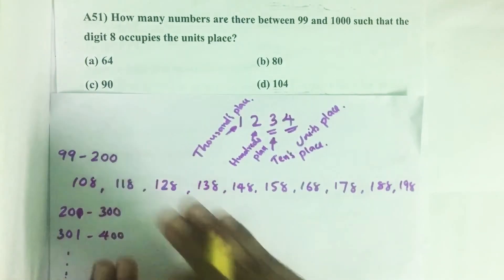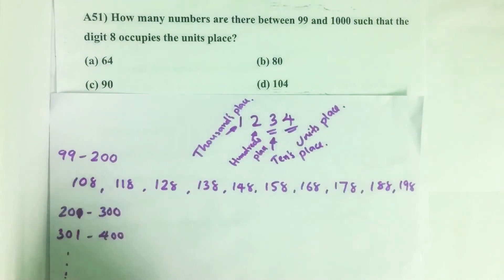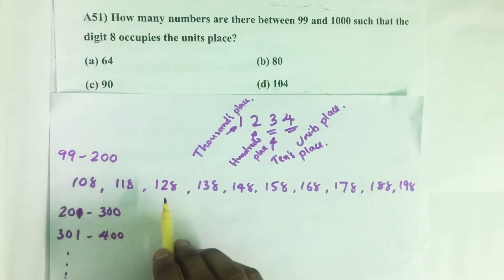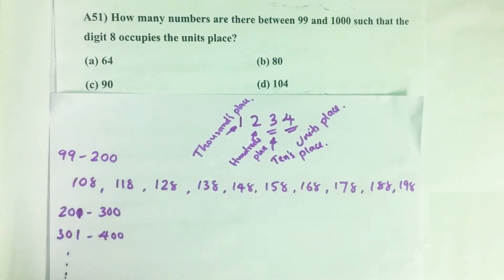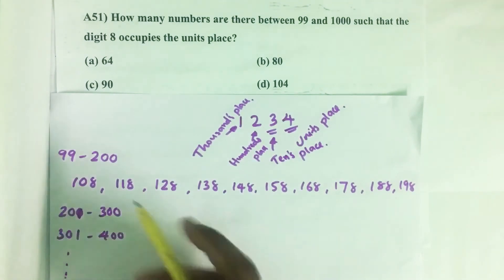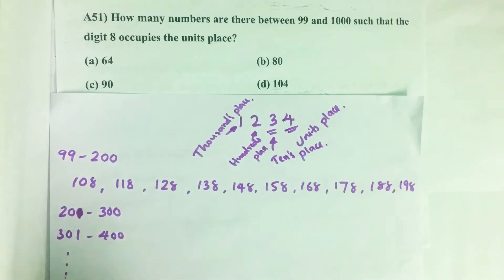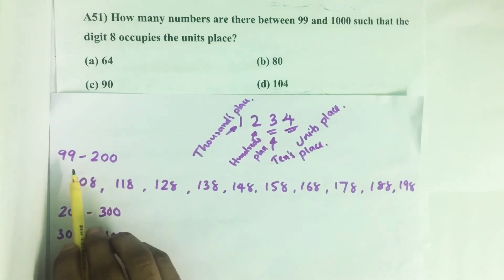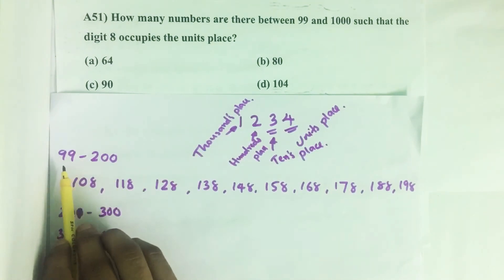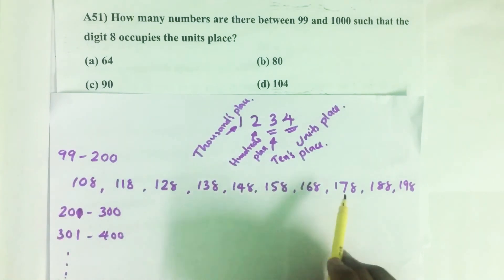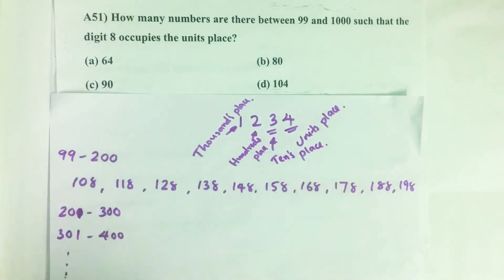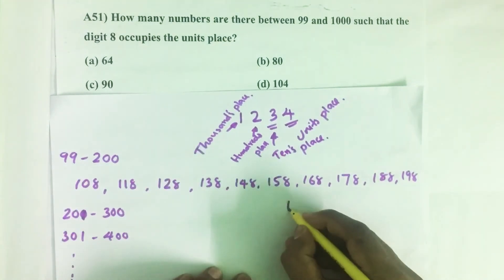From 99 to 200, there are numbers like 108, 118, 128 — in all these numbers, digit 8 occupies the unit's place. How many such numbers are there between 99 and 200? Counting them: there are 10 such numbers.